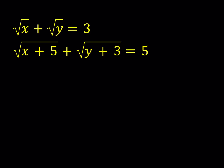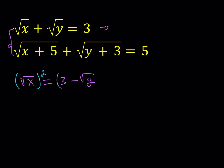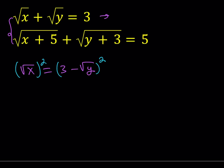From the first equation, I'd like to isolate the square root of x. I'm going to isolate the square root of x and write it as 3 minus the square root of y. Then I would like to square both sides to get rid of some of the radicals. This gives me x equals 9 minus 6 times the square root of y plus y.